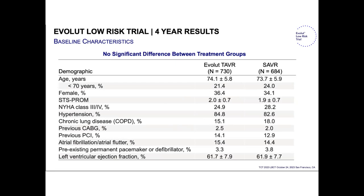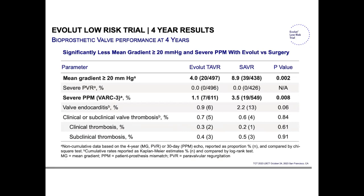In terms of bioprosthetic valve performance at five years, there are significantly fewer mean gradients greater than 20 and severe patient-prosthesis mismatch (PPM) with the Evoluted platform compared to SAVR. For severe PPM it was 3.5% versus 1.1%, which is consistent with the surgical literature. There's no difference in terms of endocarditis, and no difference in clinical and subclinical valve thrombosis.